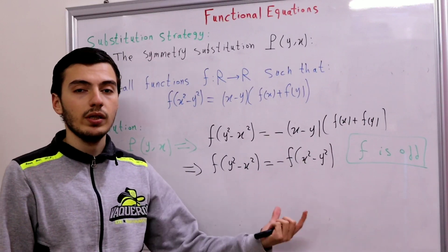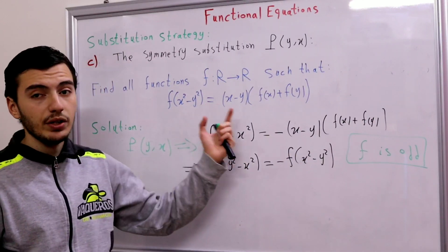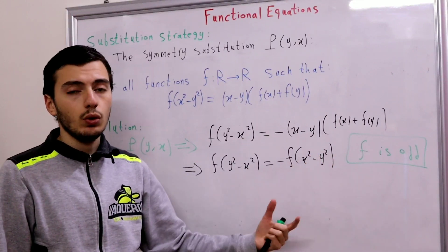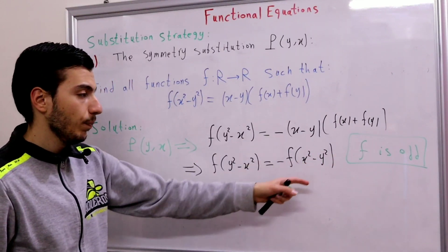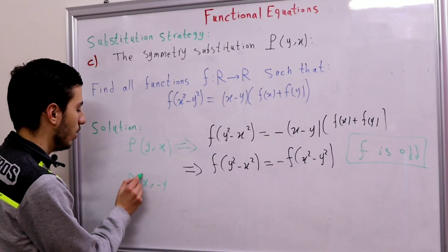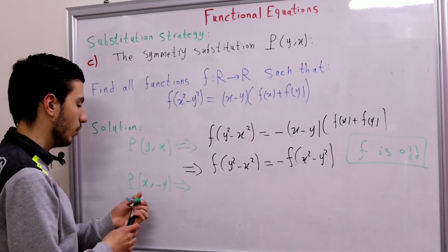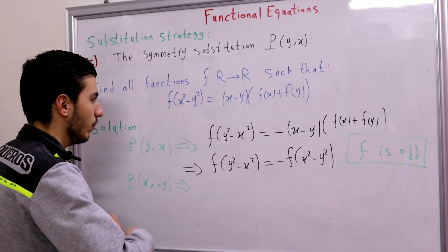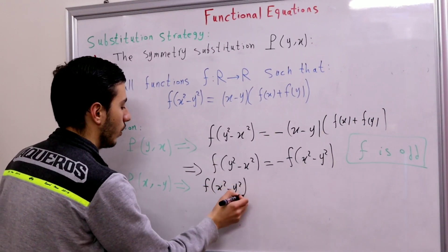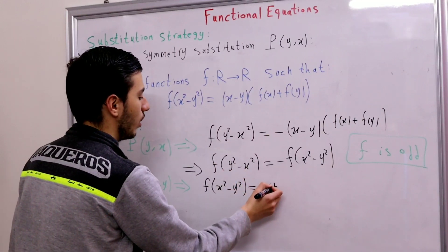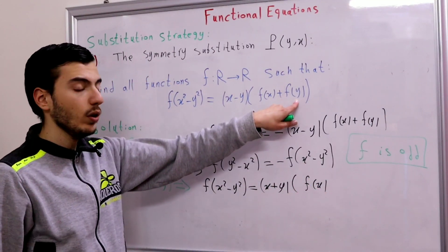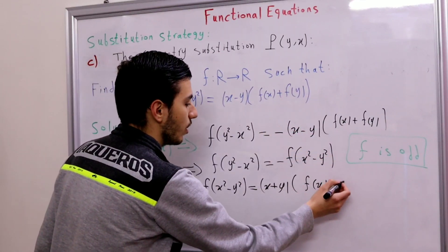So what now — can we use this information that f is odd? Of course we can. To use the odd function relation, we simply substitute y with -y. So let's apply substitution P(x, -y). The left-hand side is still the same because it's squared: f(x² - y²). The right-hand side becomes (x + y) times (f(x) + f(-y)). Since f is odd, f(-y) = -f(y).